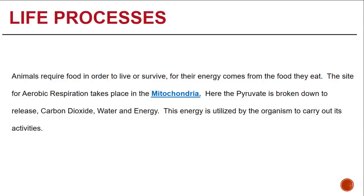Animals require food to live and survive, and their energy comes from the food that they eat. The site for aerobic respiration is the mitochondria, in the presence of oxygen. Here, the pyruvic acid is broken down to release carbon dioxide, water, and energy, which is then utilized by the organism for carrying out its own activities.